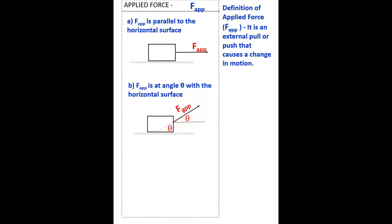Now, how we are going to work with an applied force at an angle. We need to draw some coordinates — in this case, Y and X. On the tip of this arrow, we are going to project onto the X-axis the corresponding F-app projected, which is F-X. And we are going to do the same thing with Y. Now we can easily close the right triangle here, which is easier to work with.